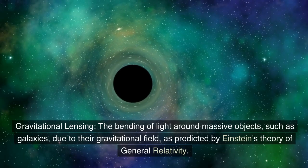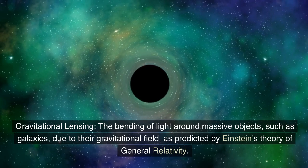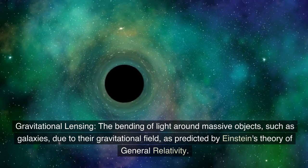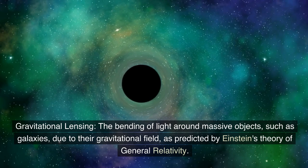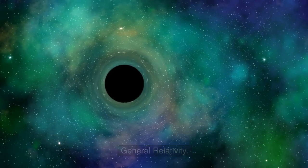Gravitational lensing. The bending of light around massive objects, such as galaxies, due to their gravitational field, as predicted by Einstein's theory of general relativity.